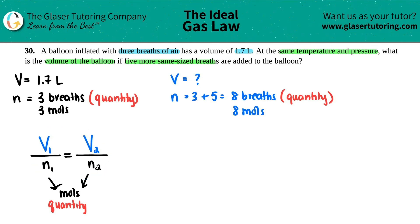Now, we're ready to use the formula. Does it really matter which side is the ones and the twos? Absolutely not. The whole idea here is that the 1.7 has to go with the number three, and the 1.7 can't go with the number eight. Since this is on the left-hand side, I'm just going to say that this is V1 and N1, and then this would be V2 and N2. So, let's plug them in.